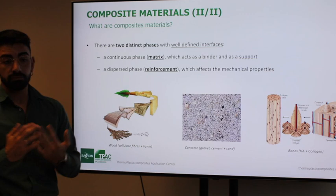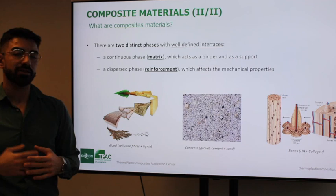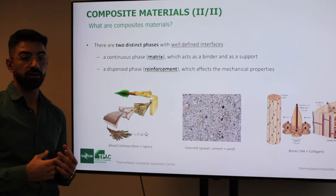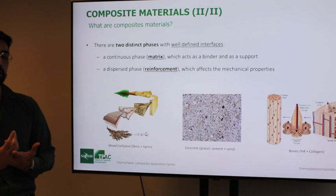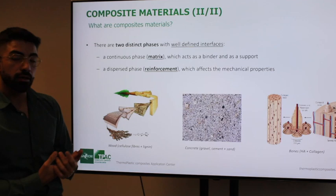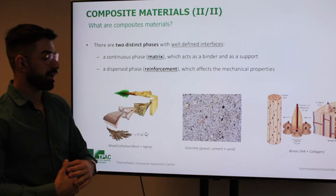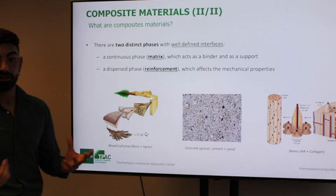We can see composites everywhere, even in nature. Wood is a composite because it is composed of cellulose and lignin — lignin acts as a thermoplastic matrix, while cellulose fibers act as reinforcement giving strength. Concrete is a mix of gravel, cement, and sand that forms a unique material. Bones in our body are composed of hydroxyapatite and collagen, where collagen acts as the matrix protecting the hydroxyapatite fibers, which have ceramic behavior and act as reinforcement for the bone.